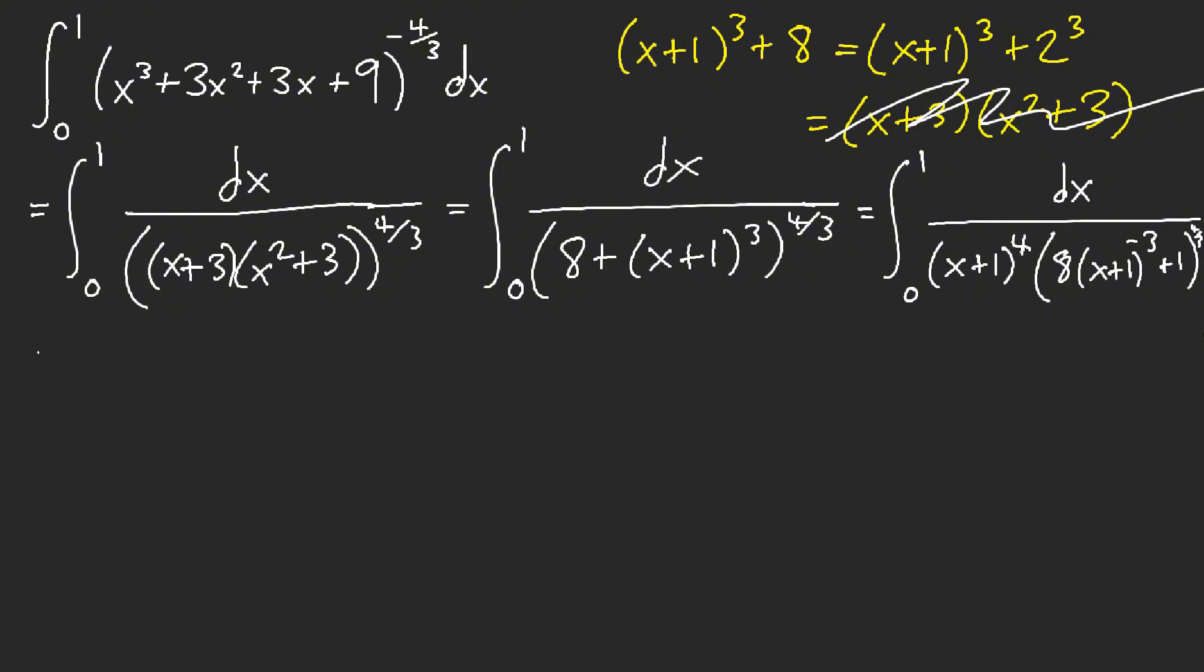So let u equal 8(x+1)^(-3) + 1. Now we have du equals -24(x+1)^(-4) dx, which is exactly what we have, that (x+1)^(-4) at the bottom.